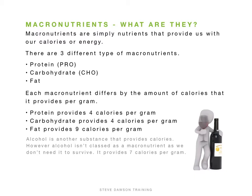Alcohol is sometimes jokingly classed as a fourth macronutrient. It's not a true macronutrient because we don't need it to survive, but it is full of calories — alcohol provides 7 calories per gram, which is more than protein and carbs but less than fat. Just bear those figures in mind.